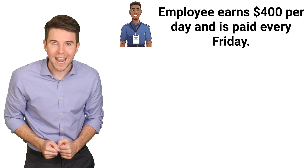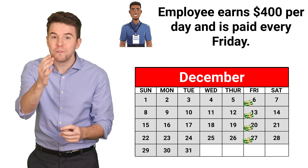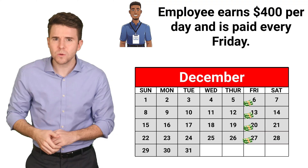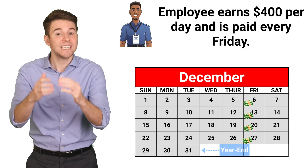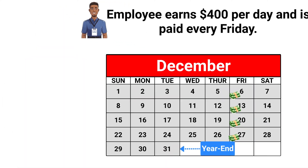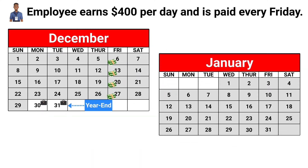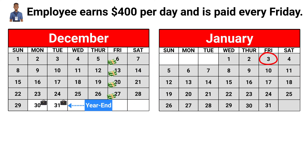Let's assume a company has one employee that earns $400 per day, and we pay that employee every Friday. Now also assume that our accounting year-end is December 31st, and this year that is a Tuesday. By the end of Tuesday, December 31st, the employee has earned two days of wages, but will not be paid until Friday of next year, which is in the next accounting period.